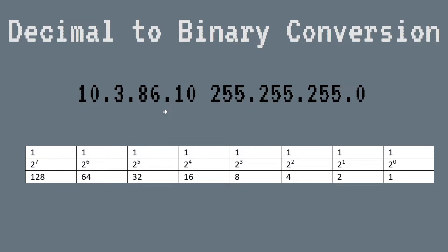Everything in computing — classical computing at least — is ones and zeros. In networking, it's ones and zeros zooming across cables, across the electromagnetic spectrum, and through fiber. It's all ones and zeros, and that's how it's interpreted, sent and received by the computer.